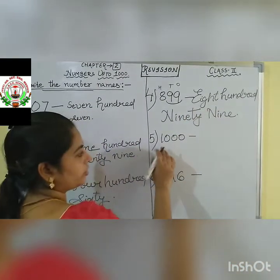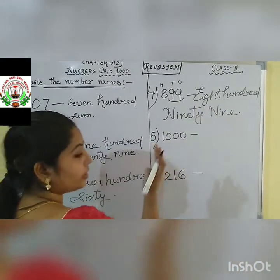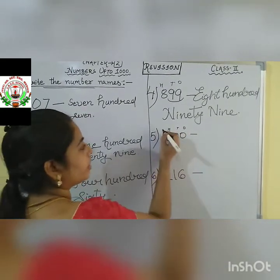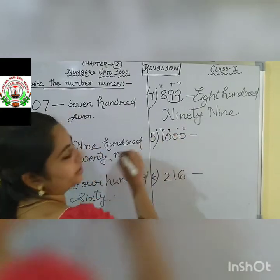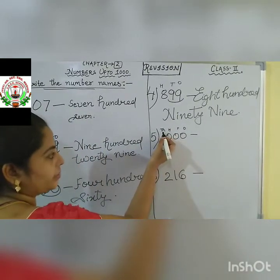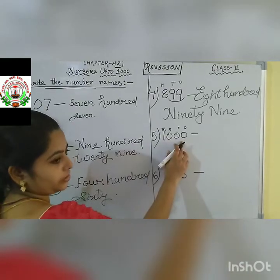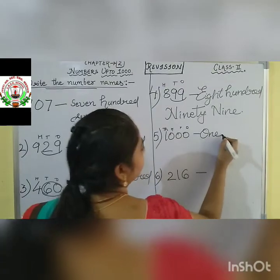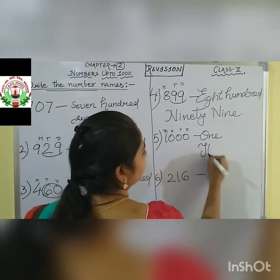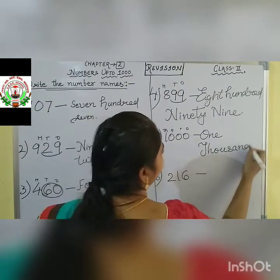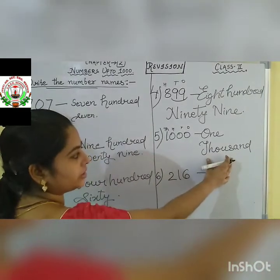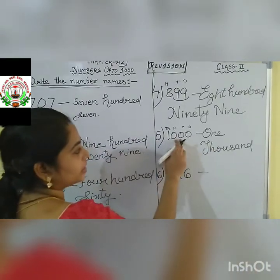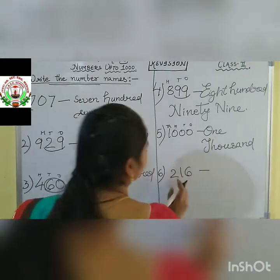Understood, children? Next question. Children, 4 digits are there: 1, 10, 100, and after 100 the next place value is 1000. So this is 1000. Write down the spelling of one, then after that we are saying one thousand. So our spelling of 1000 is this. Write down the spelling of one, then write down thousand. The 100's place, 10's place, and 1's place are empty, so leave that.